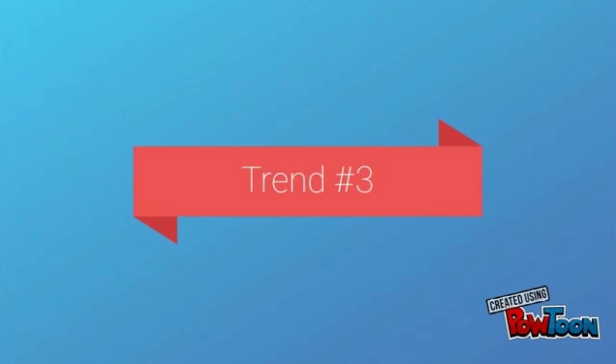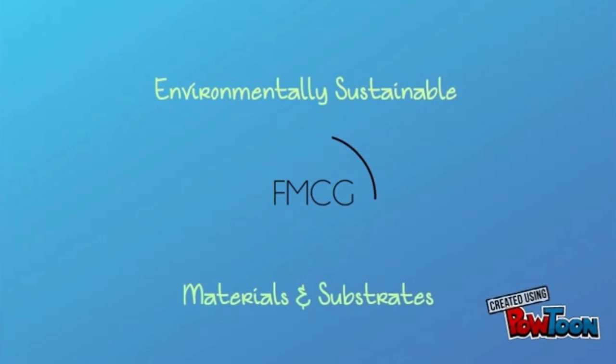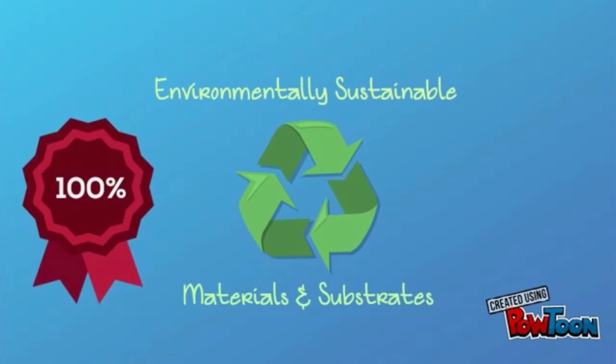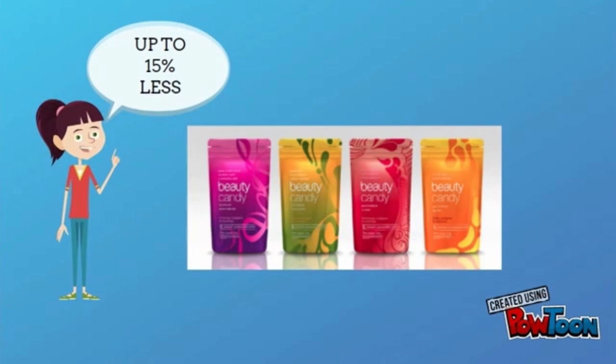Trend number three is environmentally sustainable substrates and materials. There is a push for fast-moving consumer goods to progress towards a circular economy where packages are fully recyclable. This includes 100% recycled PET bottles, labels made from renewable plant resources, or not using adhesives. This also includes stand-up pouches or other forms of flexible packaging. Some styles are made up to 15% less material than most other vitamin and supplement packaging.